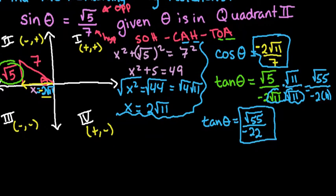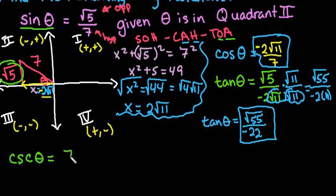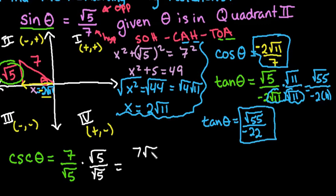Moving on to the reciprocal functions. The reciprocal of sine is cosecant. Cosecant of theta is just the reciprocal of sine, so we flip square root of 5 over 7 to get 7 over square root of 5. We have to rationalize the denominator, and when we do that we end up with 7 square root of 5 over 5. That is our final answer for cosecant.